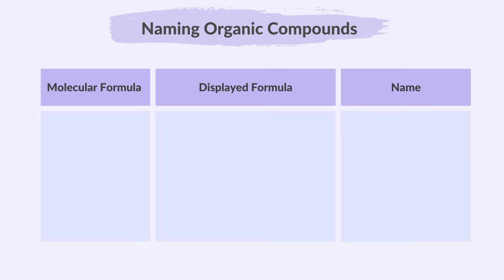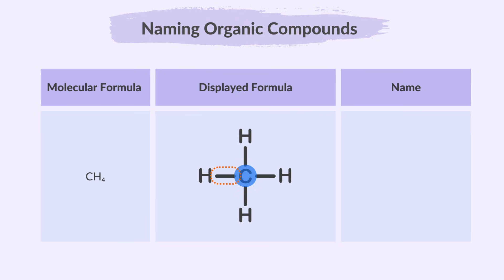Let's look at some examples of molecular and displayed formulas to determine the type of compound. First, we have the molecular formula CH4 and here is its displayed formula. We can see that it has only one carbon atom, which indicates it has a prefix of meth in its name. Since it has only single bonds and no double bonds, we know it belongs to the alkane family, so its name will end with ane. Therefore, the name of this compound is methane.